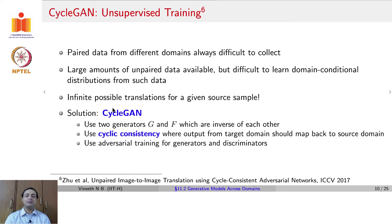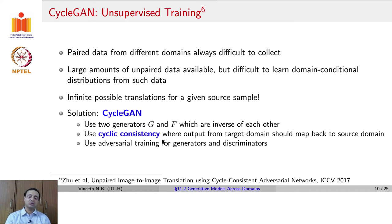That is where CycleGAN comes into the picture. It uses two generators, G and F, which are intended to be inverse functions of each other. It uses a concept called cycle consistency, where the idea is that the output of the target domain should also map back to the source domain and match the input image. It uses adversarial training for generators and discriminators to achieve this.